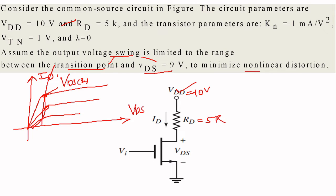This is the minimum transition point. This is your quiescent point you will be fixing, and this is your maximum VDS. So the maximum VDS is 9. The VDS saturation is unknown. So your swing should be in the range of VDS saturation to 9 volts.